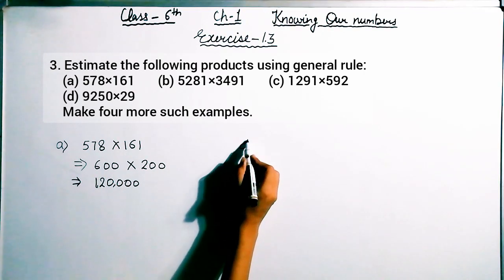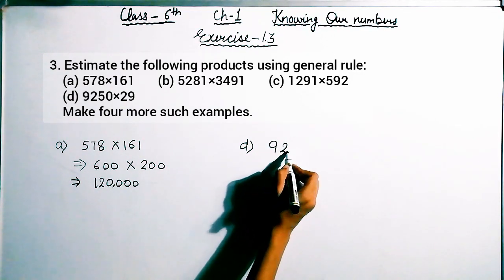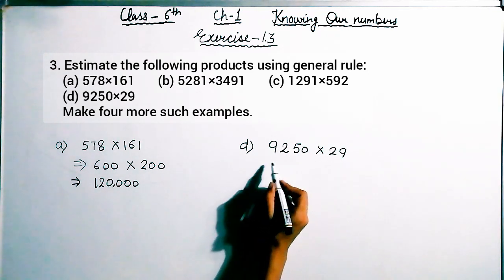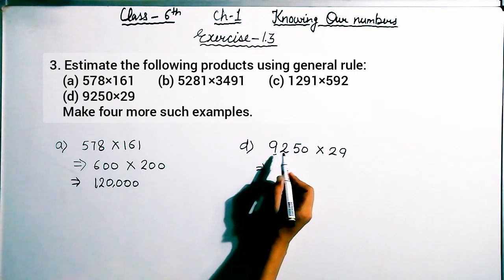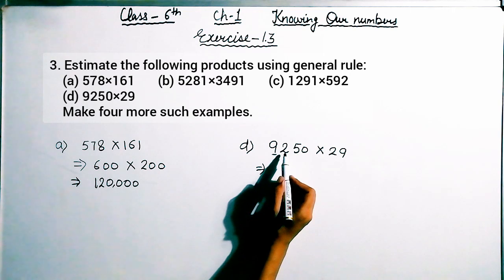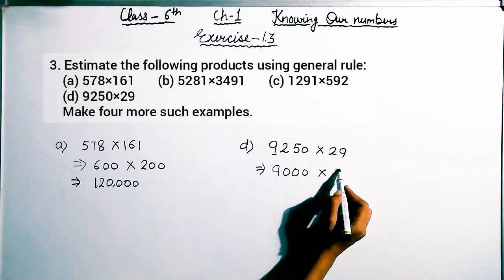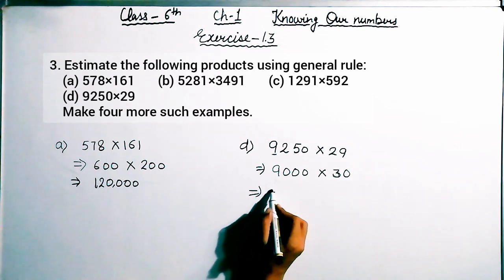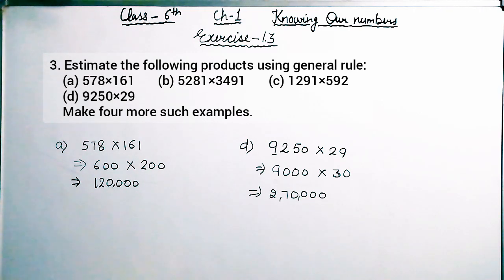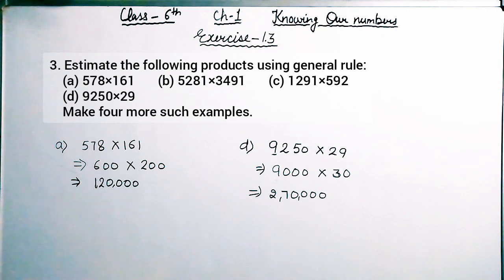Now see the last part D: 9,250 multiplied by 29. 9,250 is in the thousands place, more nearest to 9,000, so rounding off is 9,000. 29 lies between 20 and 30, more nearest to 30, so rounding off is 30. The estimated product is 2,70,000. This is all about our exercise 1.3 of chapter 1, Class 6. I hope you liked all the solutions and understood them. If there is any problem, please comment and tell me so I can improve my upcoming videos. Till then, thank you. Have a nice day.